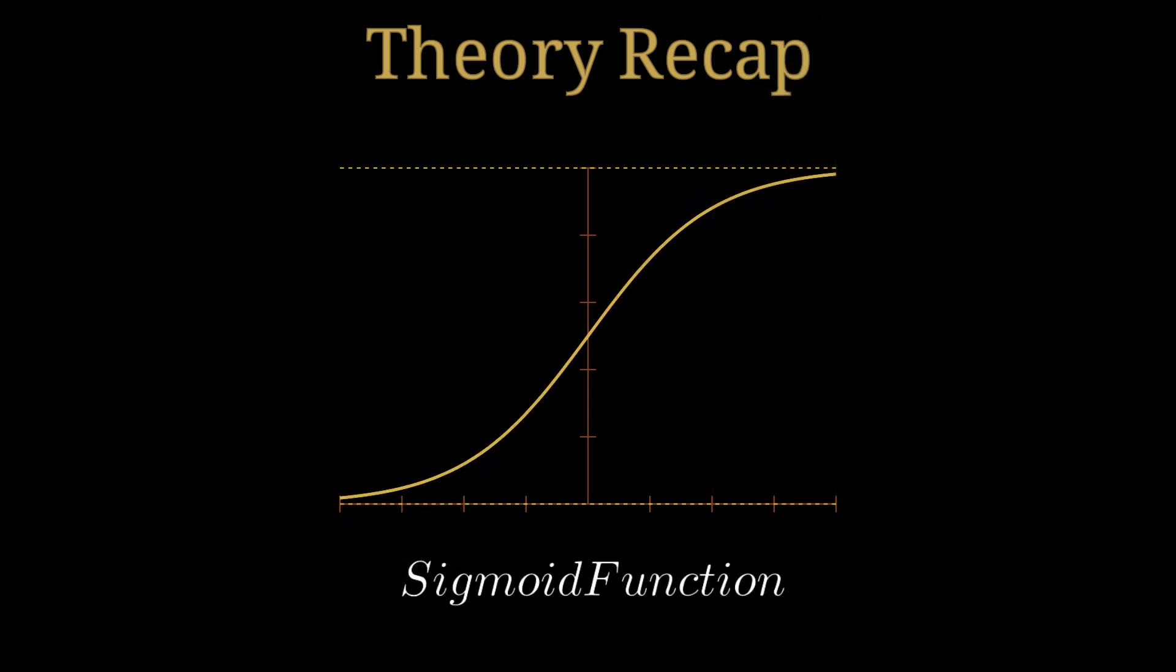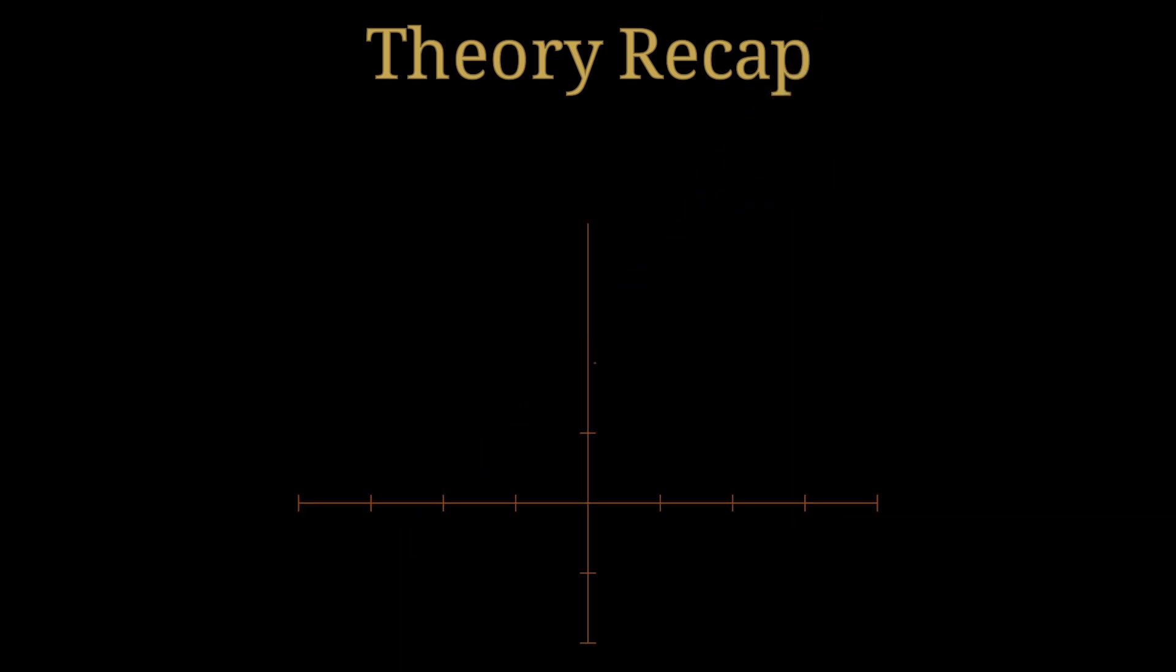That's why we use the sigmoid function, also known as the logistic function. As you can see, this function transforms this linear graph into an S-shape curve which has an interval between 0 and 1. This is perfect for classification since we can interpret them as probabilities and classify based on them.